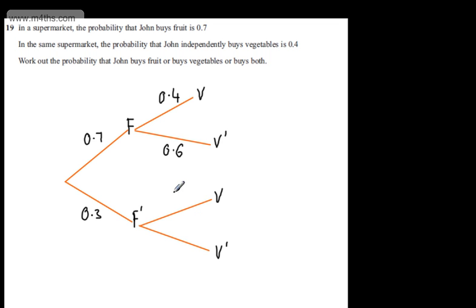Veg and not veg, 0.4 and 0.6. We're interested in John when he's buying either fruit or veg or both. If we look at these branches, this is when he buys fruit and veg.